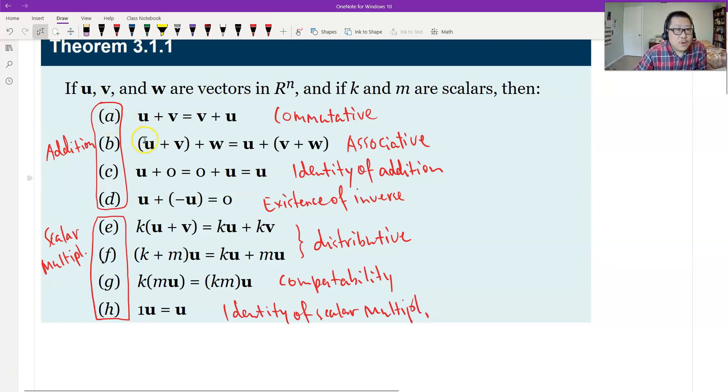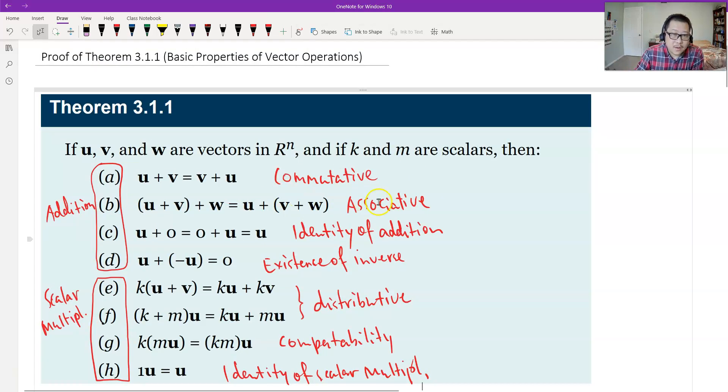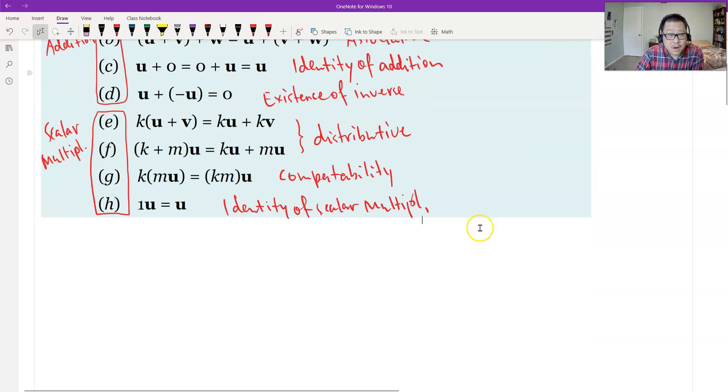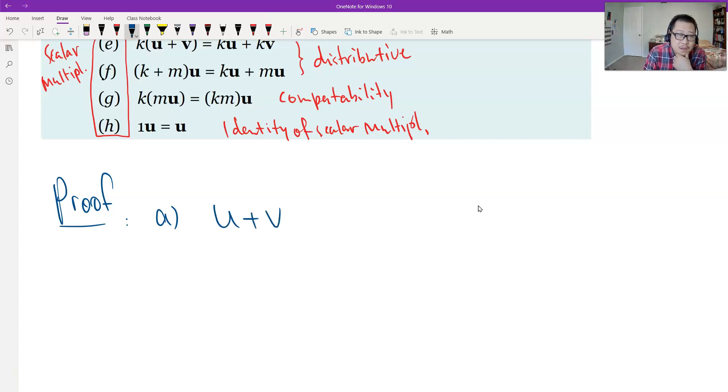Let's prove A and B only. A is the commutative, and B is the associative of addition. So let's just prove. What is A? Commutative.